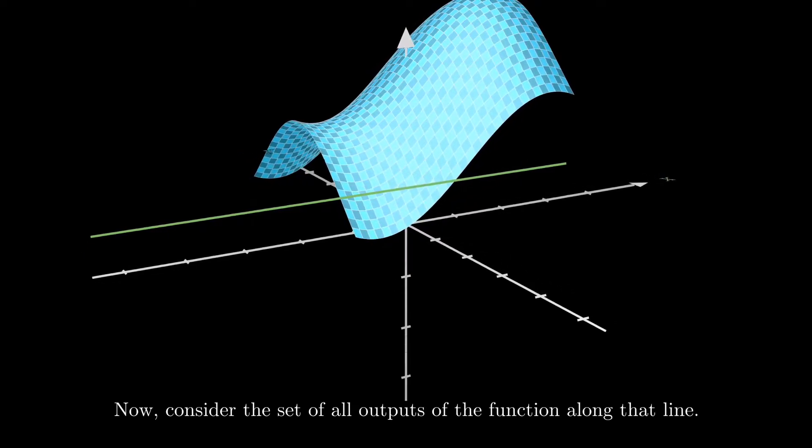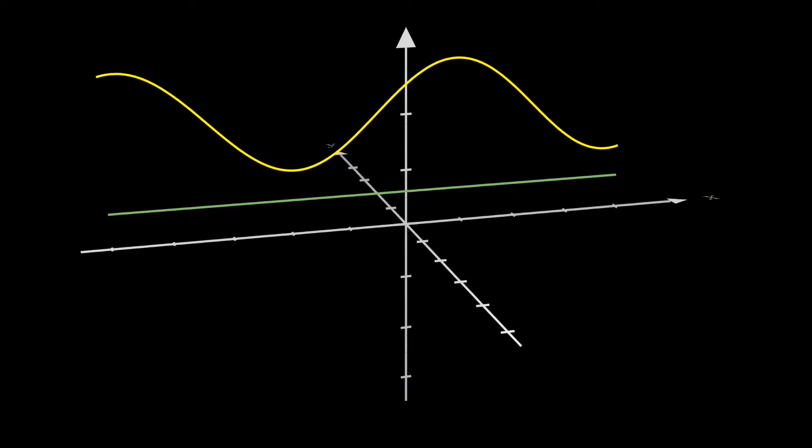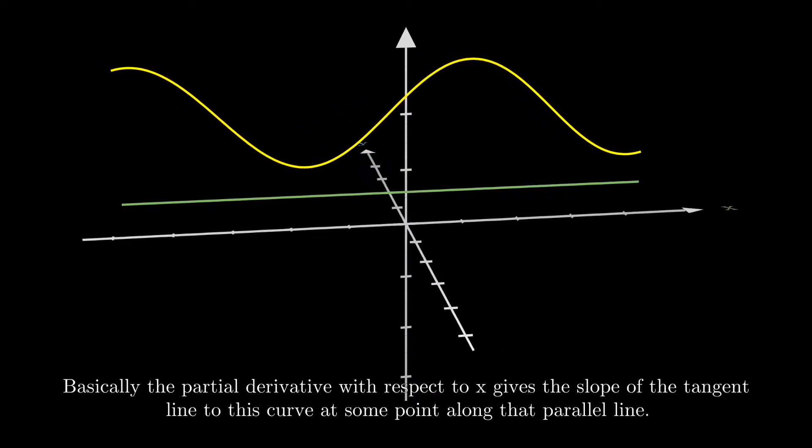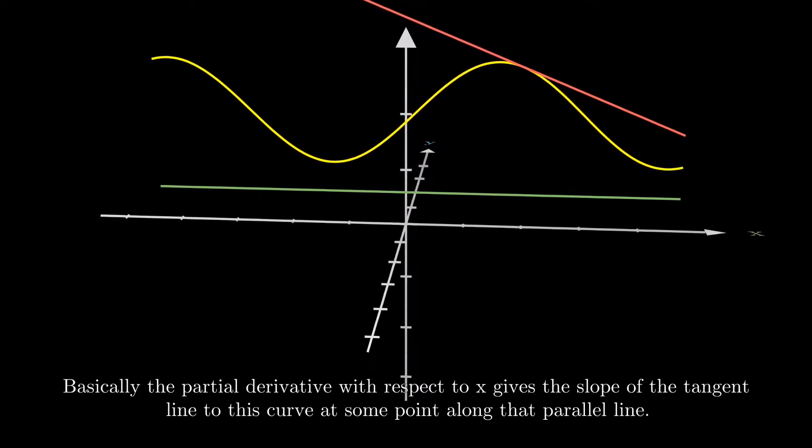Now, consider the set of all outputs of the function along that line. Basically, the partial derivative with respect to x gives the slope of the tangent line to this curve at some point along that line.